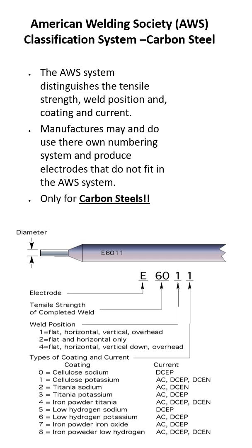All right, people. Today's rant is about the classification system set up by the AWS — this is for shielded metal arc welding, carbon steel. The thing here is we're only talking about tensile strength, weld position, and coating type and current. That's what this is telling us.